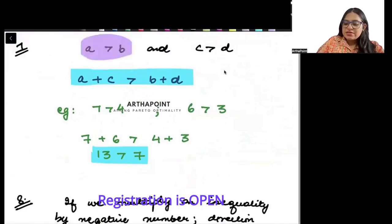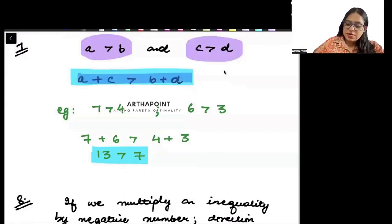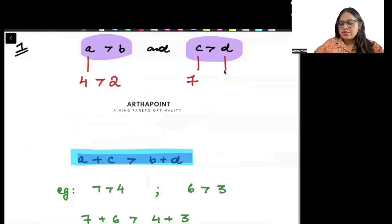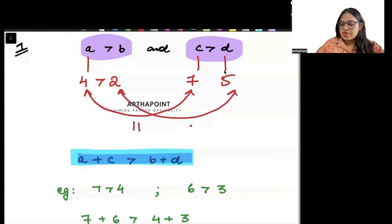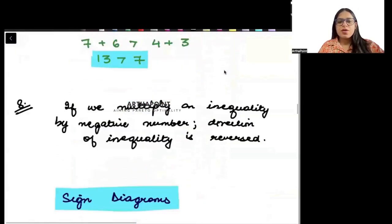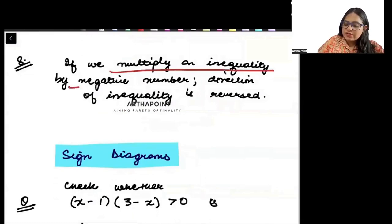Next rule: if a > b and c > d, then a plus c will be greater than b plus d. Example: a = 4, b = 2, c = 7, d = 5. Then a + c = 11 and b + d = 7, so 11 > 7. Proved.